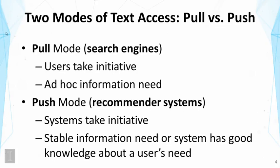An ad hoc information need is a temporary information need. For example, you want to buy a product, so you suddenly have a need to read reviews about the related products. But after you have collected information and purchased your product, you generally no longer need such information. So it's a temporary information need. In such a case, it's very hard for a system to predict your need, and it's more appropriate for the users to take the initiative. That's why search engines are very useful today.